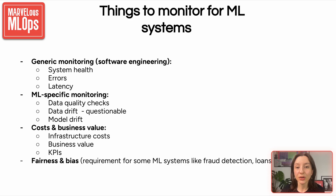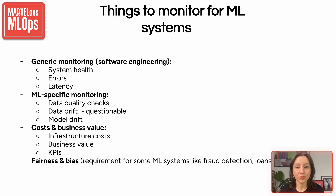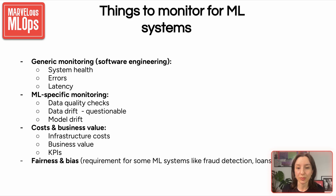And then we have cost and business value related metrics. Even if your system is technically working, it is important to ask: is it worth it? Are we optimizing our resource usage? Are we paying for GPUs 24/7 for a model that only runs once a day? Are we moving the needle on key outcomes — higher conversion, lower churn, faster fraud detection, whatever your goal is? And KPIs: these vary depending on the use case, but they are the ultimate performance signals. And finally, we have fairness and bias related metrics, especially important in sensitive use cases like fraud detection or loan approvals. You may need to monitor and mitigate biased behavior to ensure compliance and ethical usage.